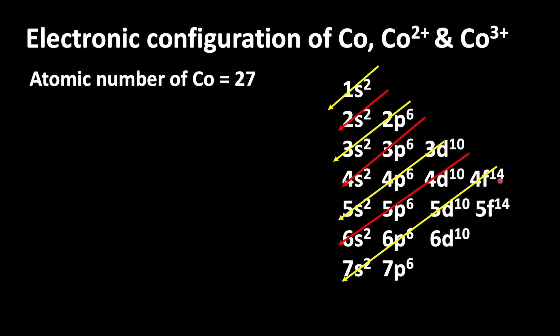From this we are going to write the electronic configuration of cobalt: 1s² 2s² 2p⁶ 3s² 3p⁶, and after 3p⁶ electrons enter into 4s orbital, so 4s², then 3d⁷. If you count all these electrons you will get the atomic number of cobalt, which is 27.